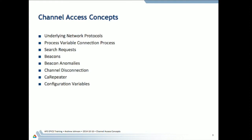In this lecture I'll be talking about the network protocols that channel access makes use of, describing the connection process for how you actually connect to a particular process variable, and what search requests are. We'll also cover beacons and beacon anomalies, the channel disconnection process, the CA repeater, and configuring your clients to talk to servers that might not be in the same subnet.